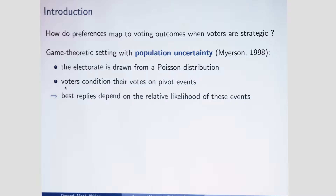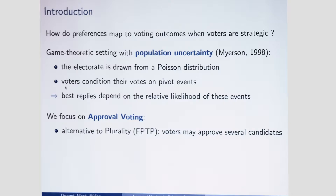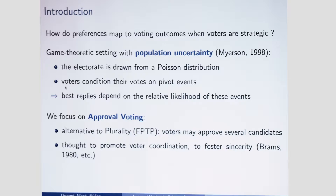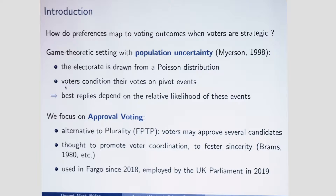We are interested in particular in the rule of approval voting. Approval voting is a prominent alternative to plurality voting or first-past-the-post, which is often used in the US and the UK. It is a voting rule in which voters may approve as many candidates as they want and the candidate with the most approvals is elected. In practice it is not used a lot, but it is used for instance in the city of Fargo since the mid-terms, and it has been employed recently in the votes on the Brexit motion by the UK Parliament.